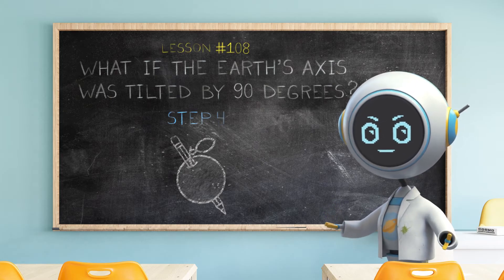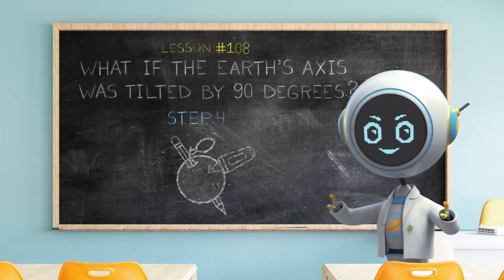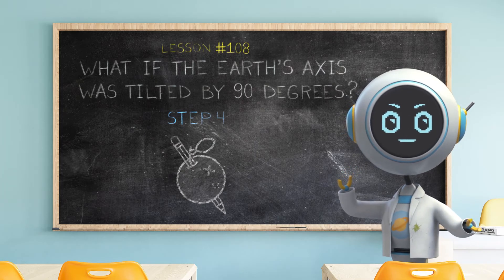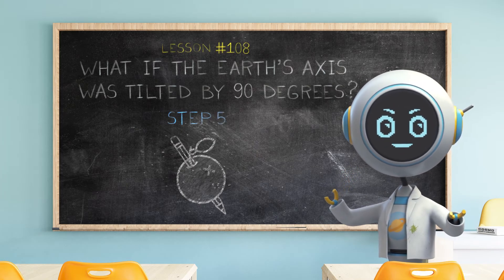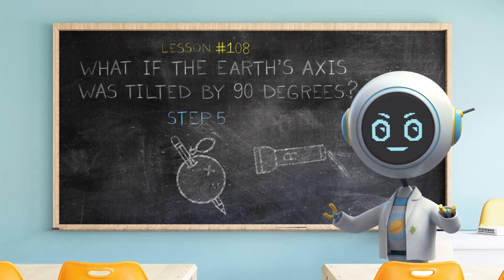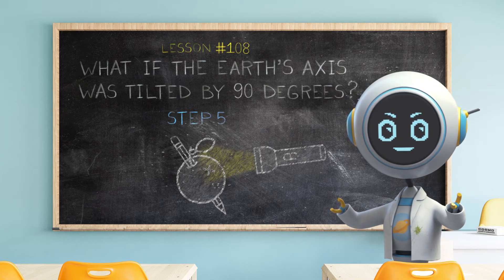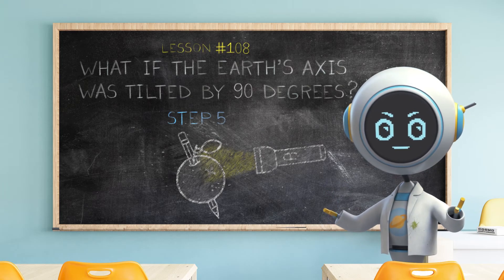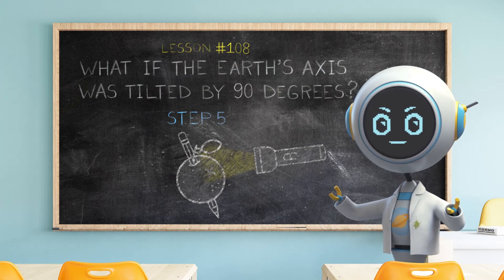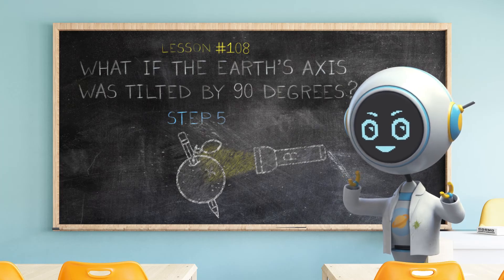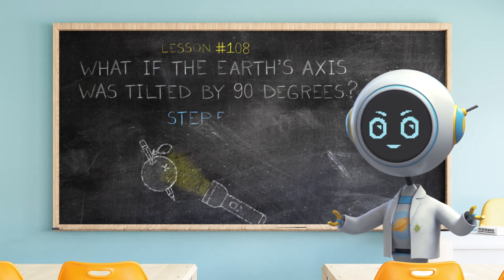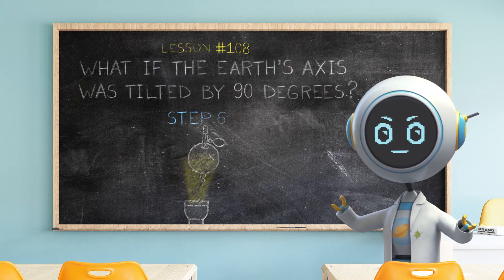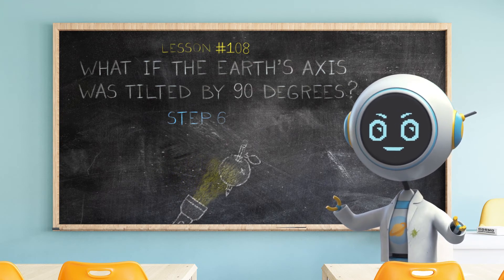Step four: with the marker, make a small X showing where you live on Earth. Step five: one person holds the flashlight and represents the sun. The other person holds the fruit at a 23 degree tilt and represents Earth. Make sure the flashlight is always pointing toward Earth. Step six: the Earth person walks around the sun person, keeping the tilt of the fruit at the same angle.